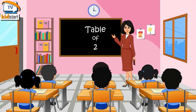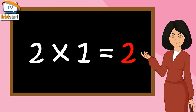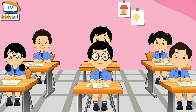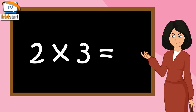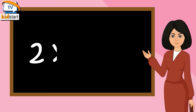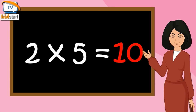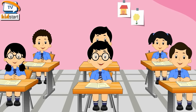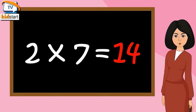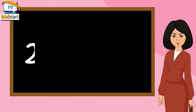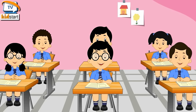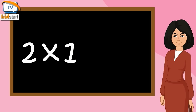Table of Two. Two Sixes are Twelve. Two Sevens are Fourteen. Two Eights are Sixteen. Two Nines are Eighteen. Two Tens are Twenty.